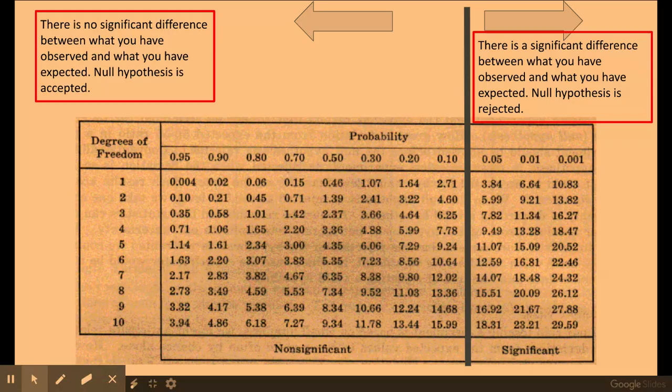Now this is an example of the critical value tables and the probability tables that you'll be expected to compare and find your chi-squared value on. Now if your value lies to the left hand side of your 5%, so this is also known as 0.05.